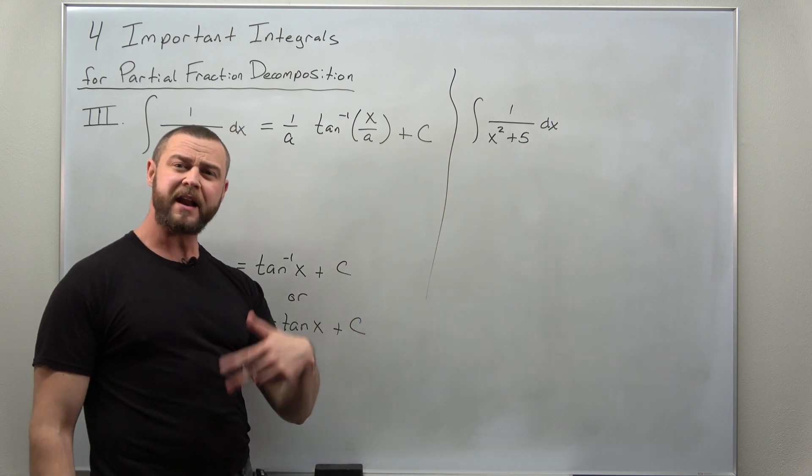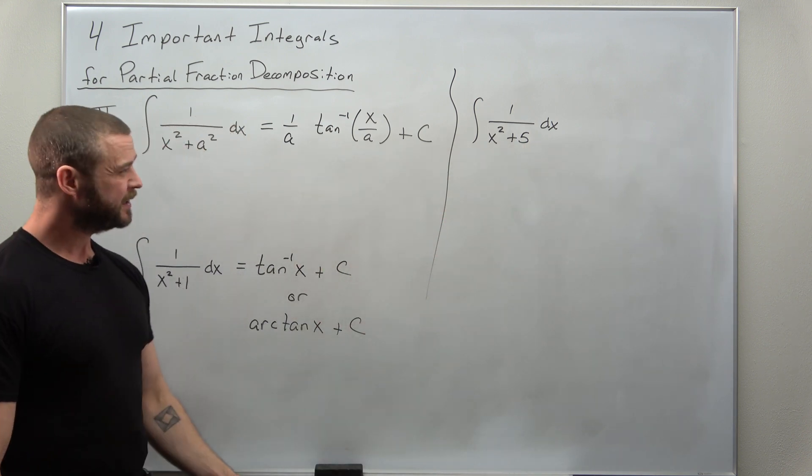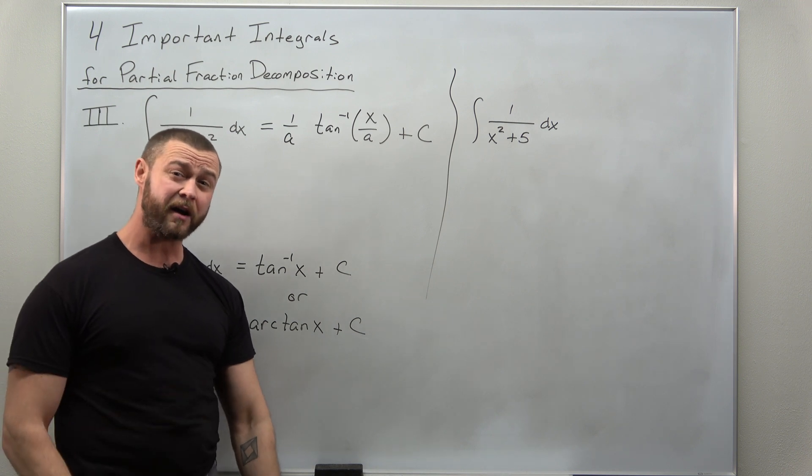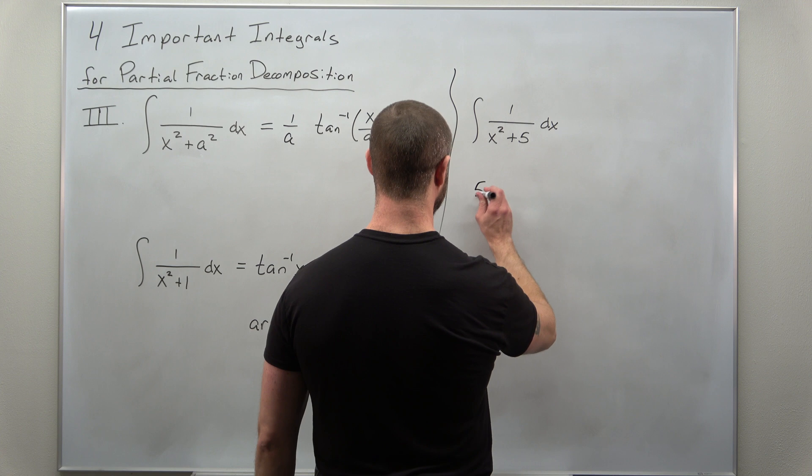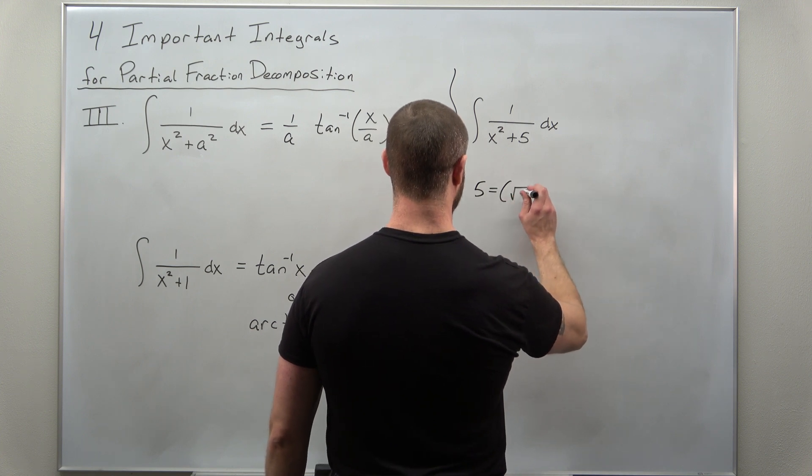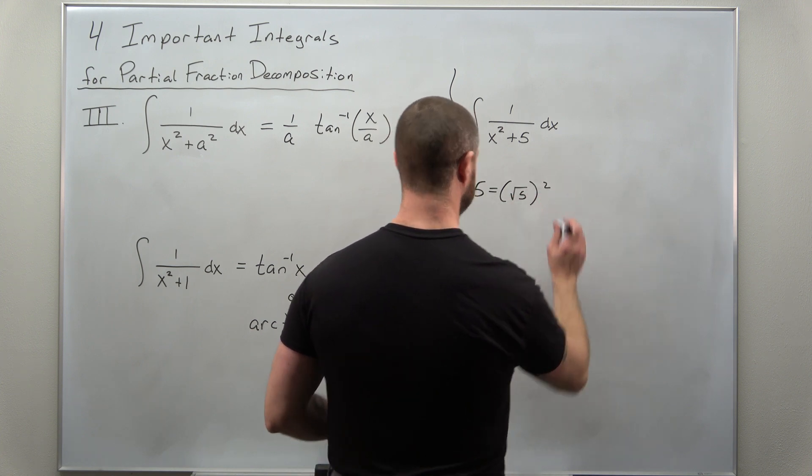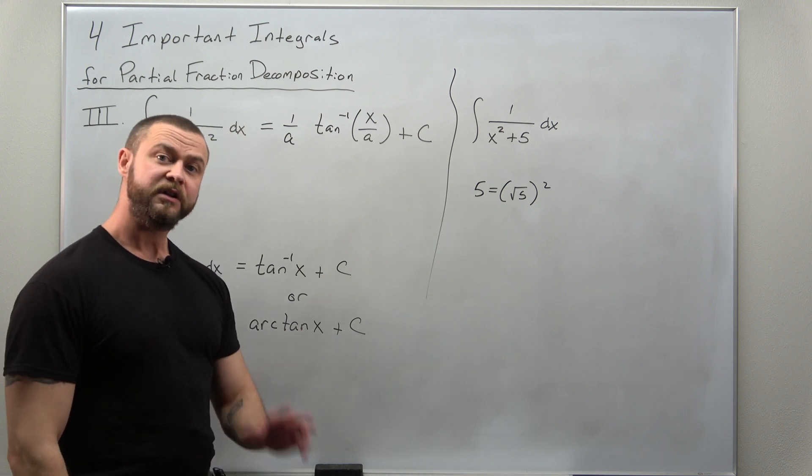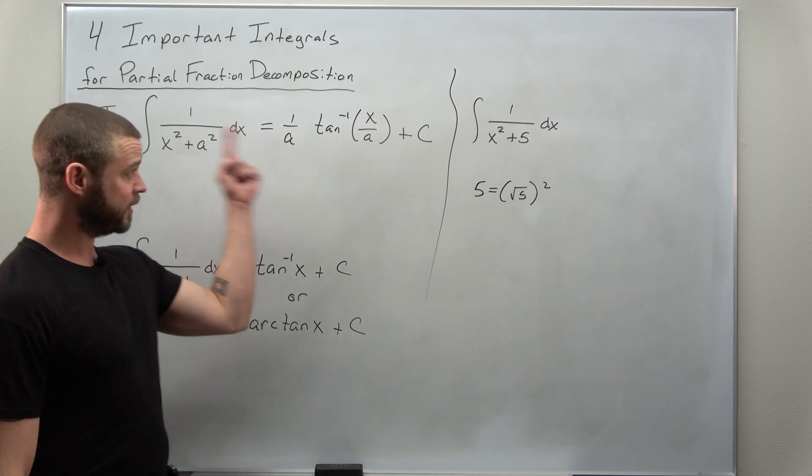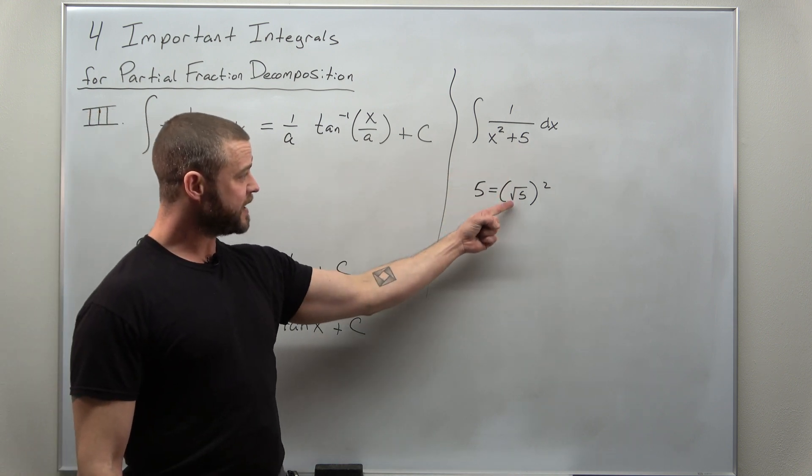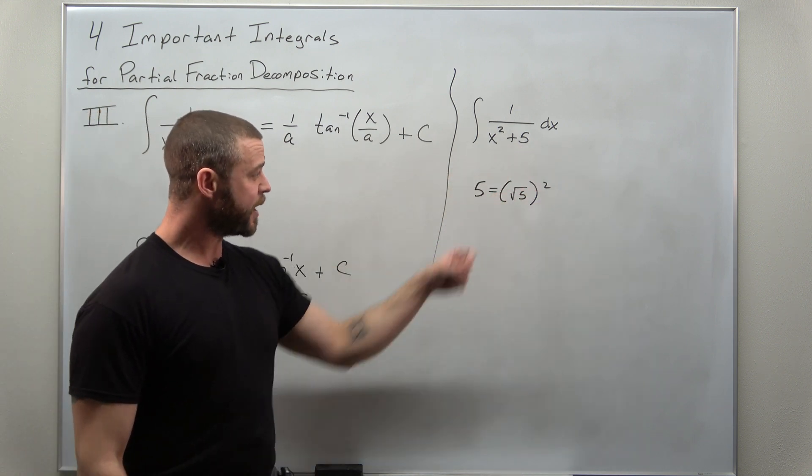And what we want to do to make use of this formula is make the number in that denominator there, we want to represent it as something squared. Now, 5 is not a perfect square, but we can cheat. We can think of 5 as square root of 5 squared. So here, we're going to identify the value of a in this formula. 5, we're going to think of it as square root of 5 squared. This part inside, that's going to tell us our a, so we're going to use a as square root of 5.